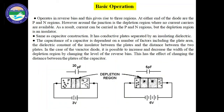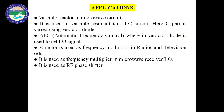Varactor diodes have a number of applications. They are used as variable reactors in microwave circuits and in variable resonant tank LC circuits. They are also used in automatic frequency control, where the varactor diode is used to set the local oscillator (LO) signal. Varactor diodes are used as frequency modulators in radio and television sets, as frequency multipliers in microwave receivers, as RF phase shifters, and in voltage-controlled oscillators.